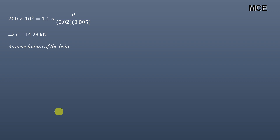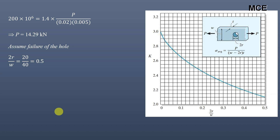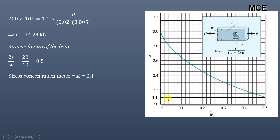Next, we assume that failure of the bar will occur at the hole portion. For this case, we find the ratio 2r/w, where 2r is the diameter of the hole (20 mm) and w is the width of the bar (40 mm), giving 2r/w = 0.5. Using the stress concentration factor chart for holes, at 2r/w = 0.5, drawing a vertical line gives us a stress concentration factor K = 2.1.